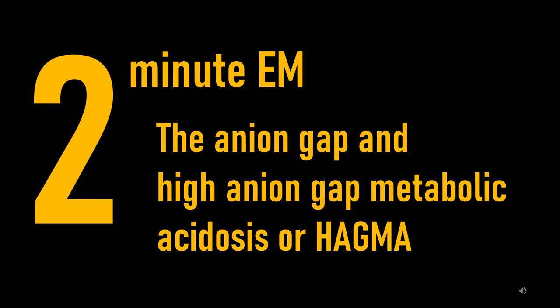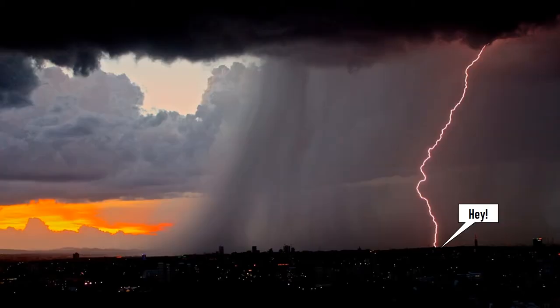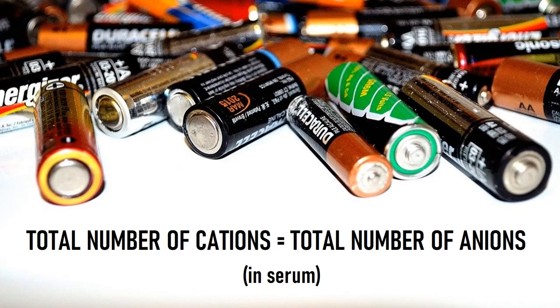The anion gap and high anion gap metabolic acidosis, or HAGMA. The anion gap can be useful in your undifferentiated sick patient. By convention, in order to avoid getting struck by lightning all the time, your serum must remain electrically neutral. So the total number of cations must equal the total number of anions.